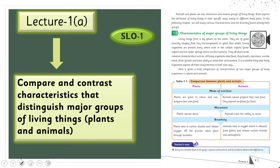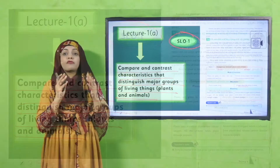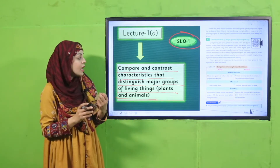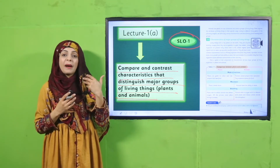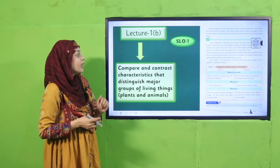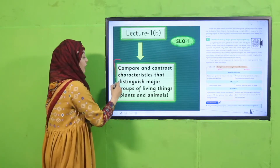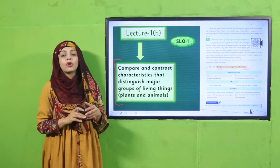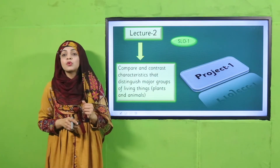In lecture number one-A, SLO number one states: compare and contrast characteristics that distinguish major groups of living things — plants and animals. Students will be able to differentiate between animals and plants and identify the major characteristics found in each. Lecture one-B will follow the same student learning outcome before moving forward.